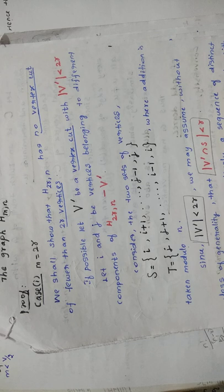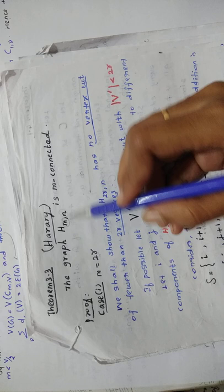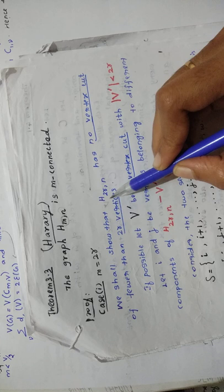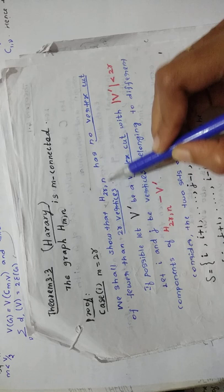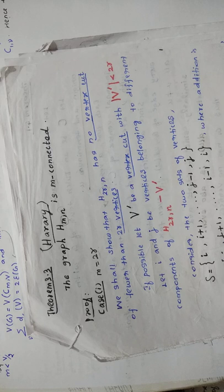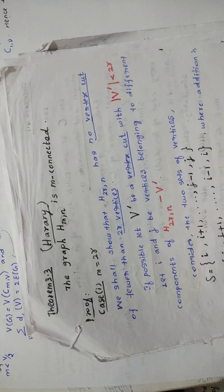Let's see case 1. We shall show that H(2R, N) has no vertex cut of fewer than 2R vertices. In the place of M you are putting 2R. It means if you remove vertices that is less than 2R, then the graph is not going to disconnect — you could not say there is a vertex cut. So there is no 2R-connectivity broken.